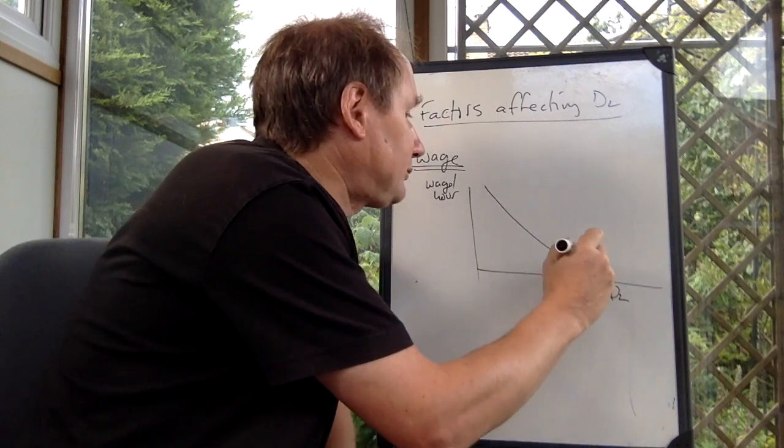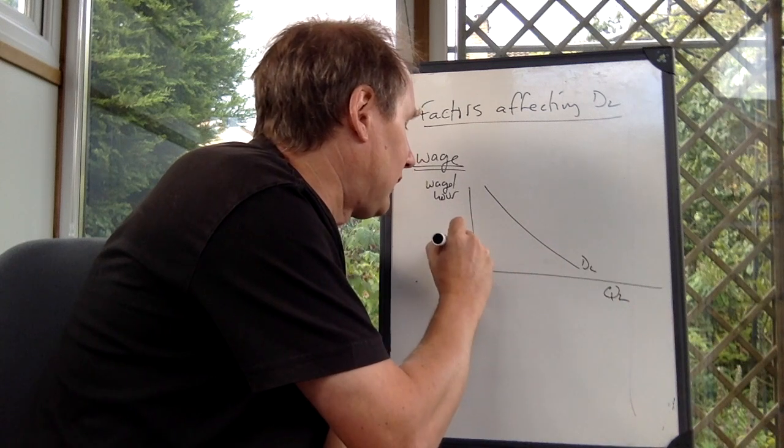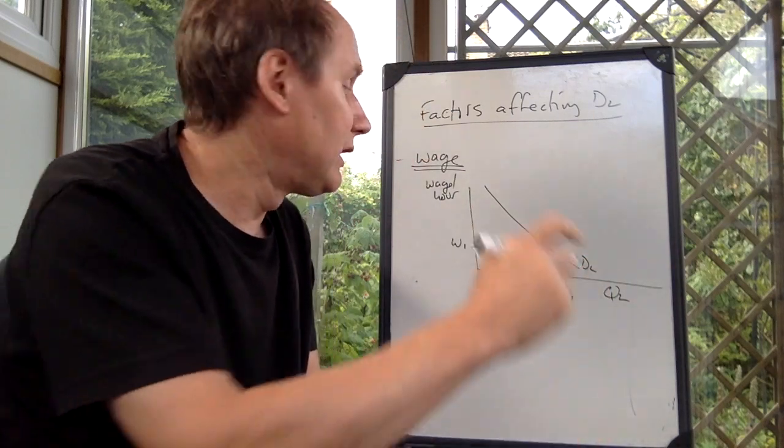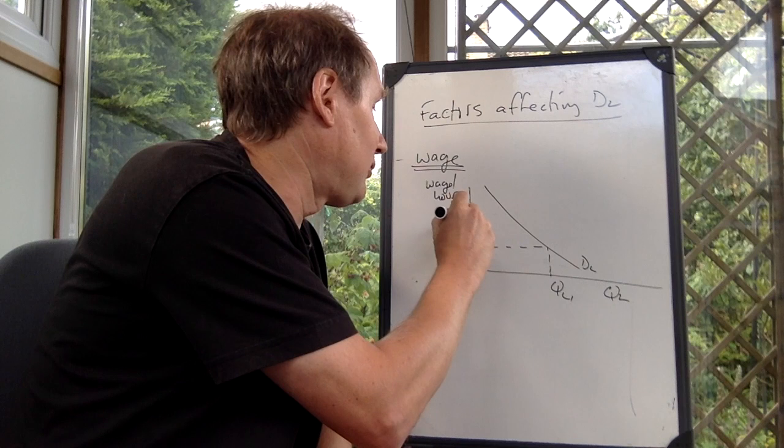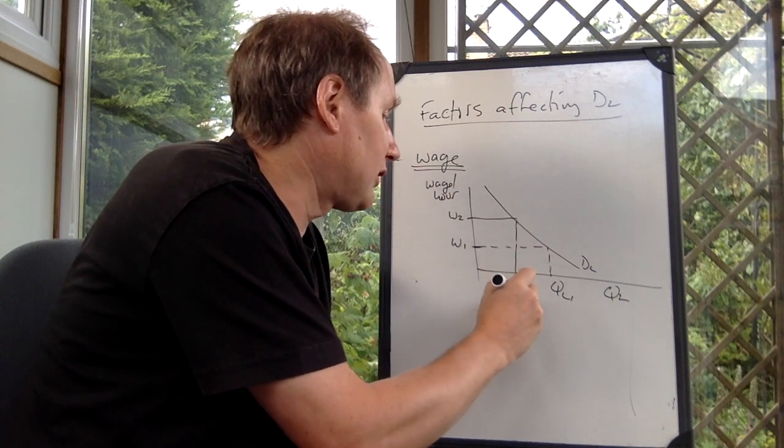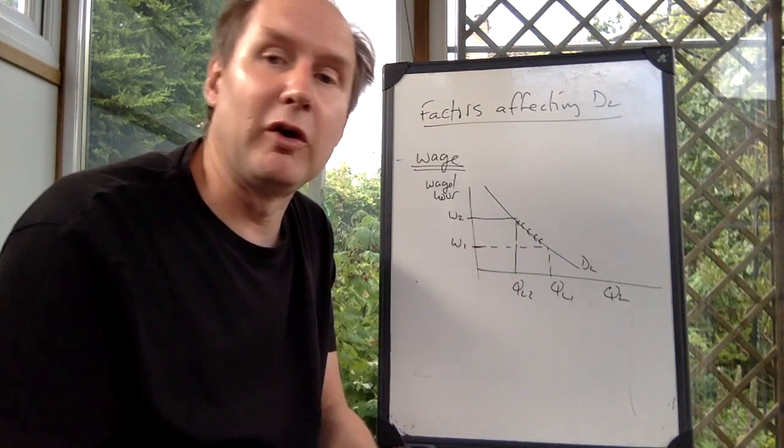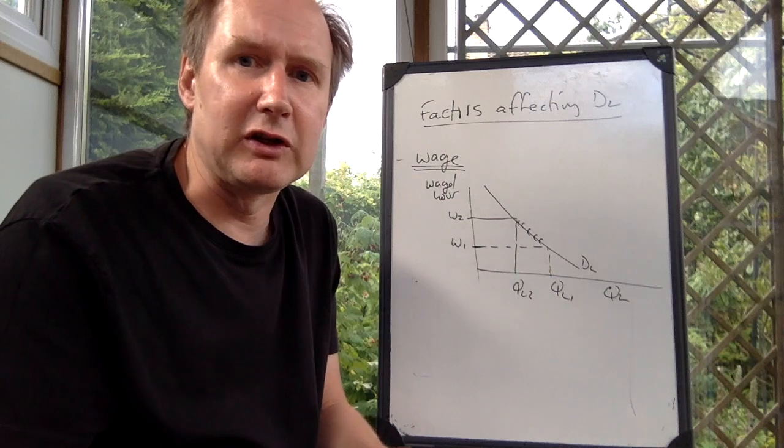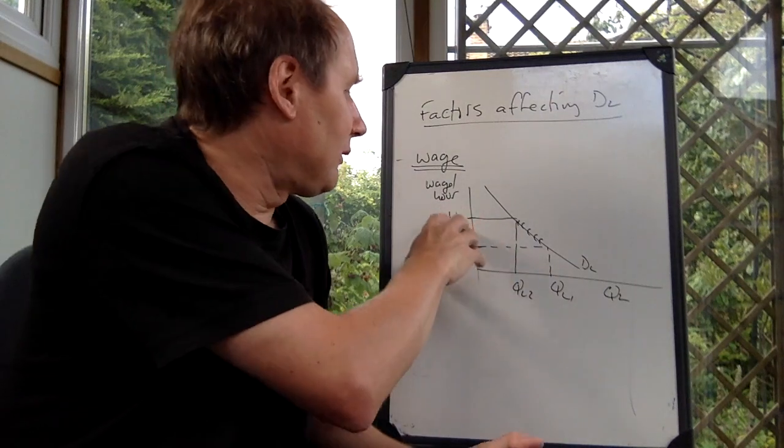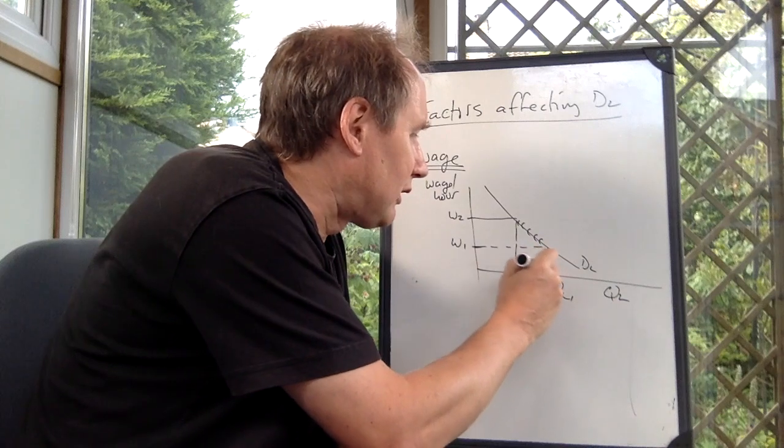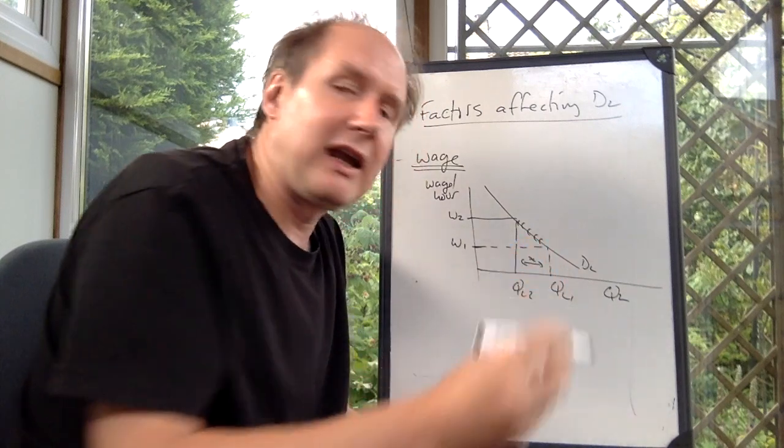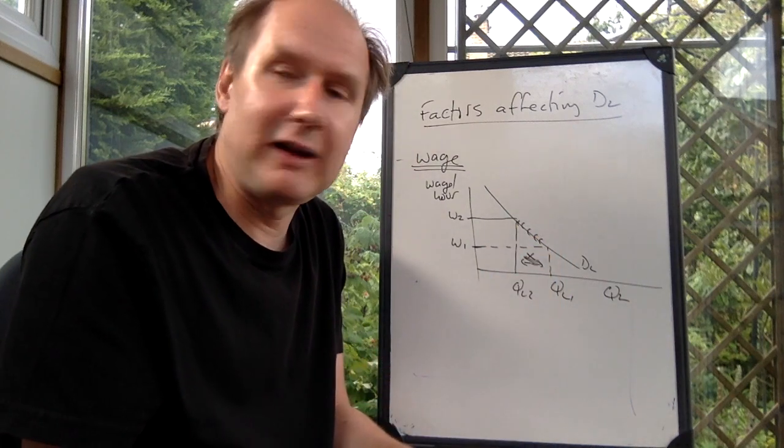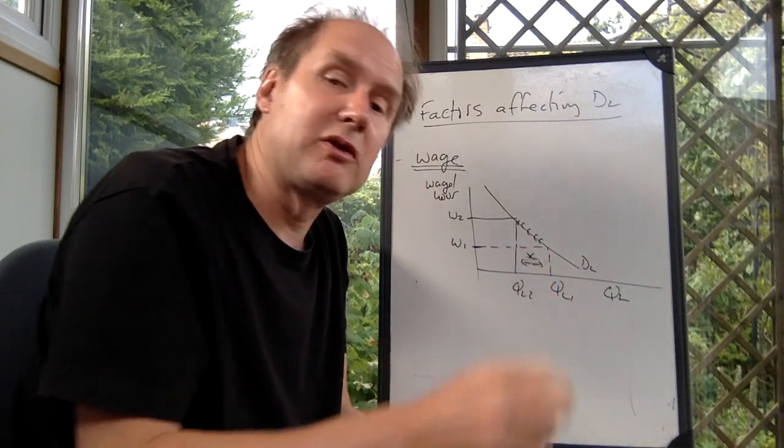So what we might say is that at a low wage down here at W1, firms can afford to employ lots of workers. As the price of labour goes up to W2, there's a contraction in demand. Fewer firms can afford to employ workers, or firms realise that it's just not worth it. So at this higher wage, these workers, these ones here, which we call X, those X workers there, they're not adding enough value to be worth employing.